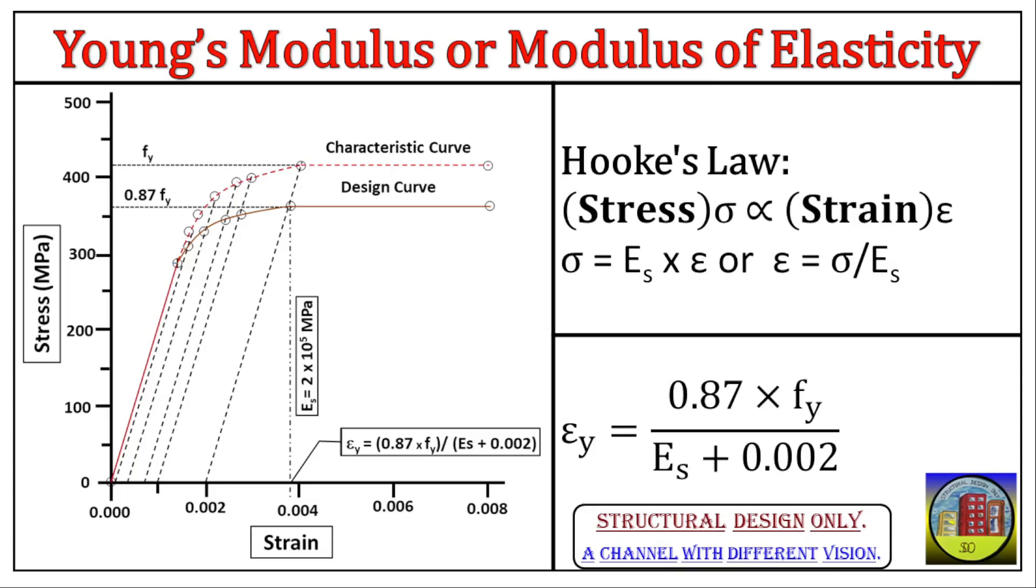Imagine stretching a steel rod. Epsilon y, strain - this epsilon y represents the strain in the steel. It tells us how much the steel stretches, relative to its original length, when it reaches its yield stress. Think of stretching a steel rod. The higher the epsilon y value, the more the rod stretches at its yield point.